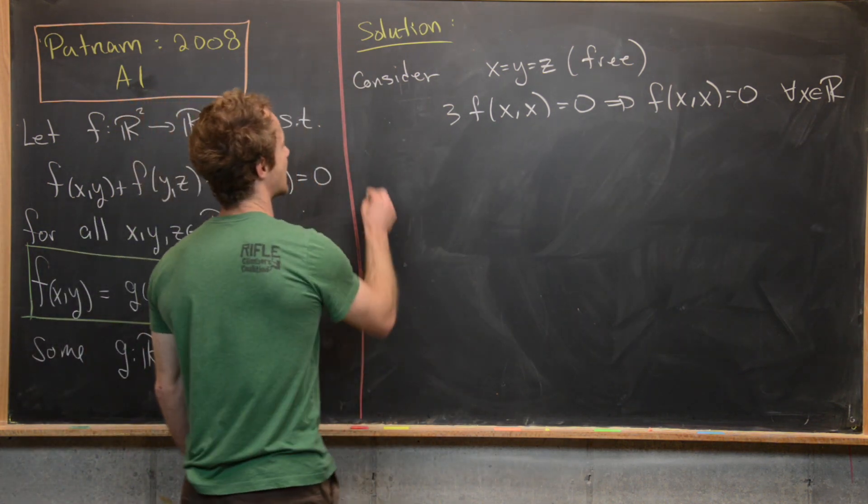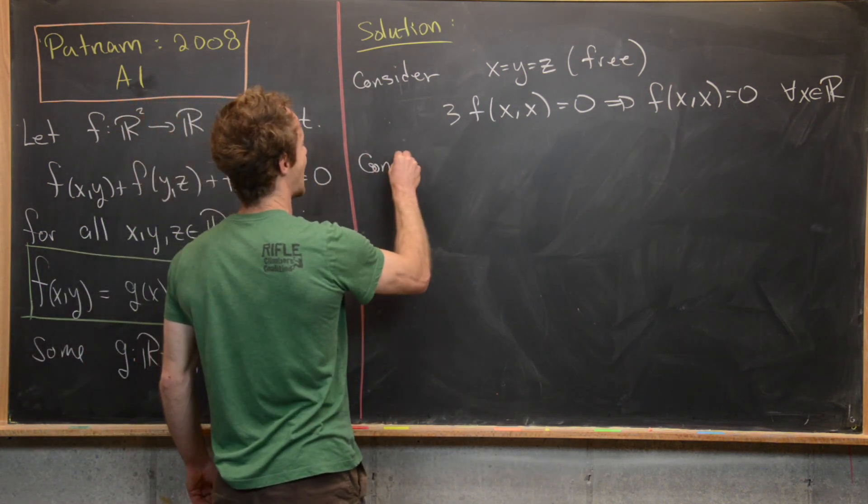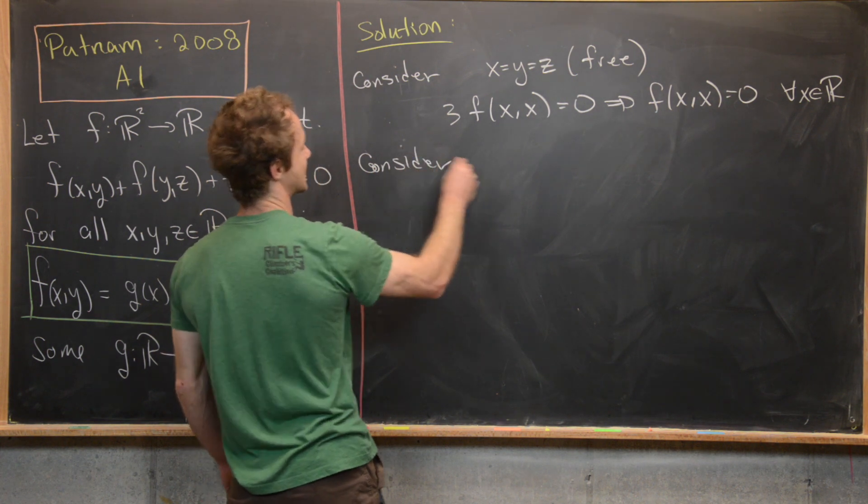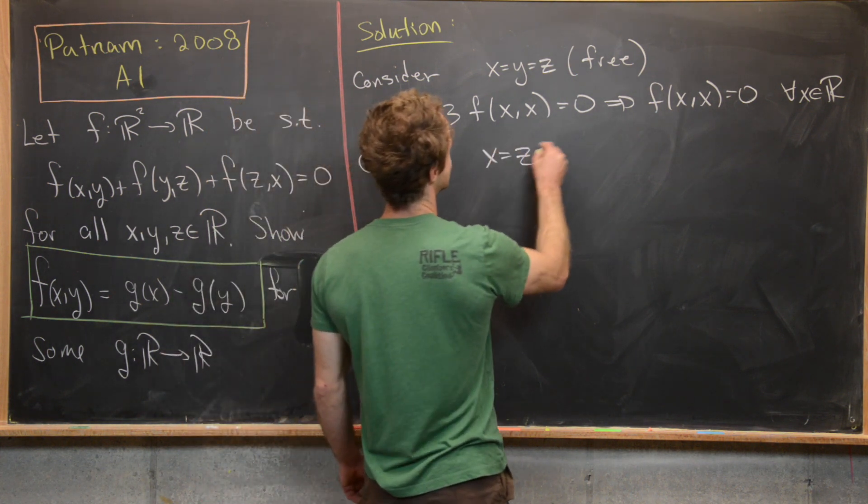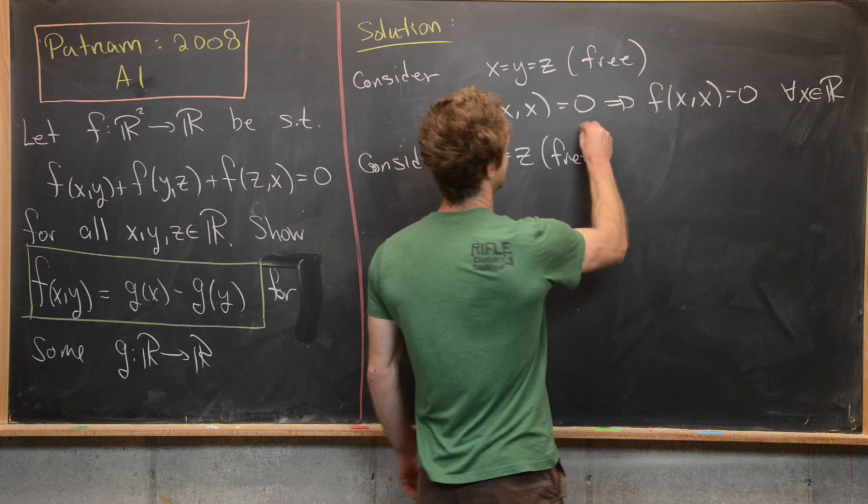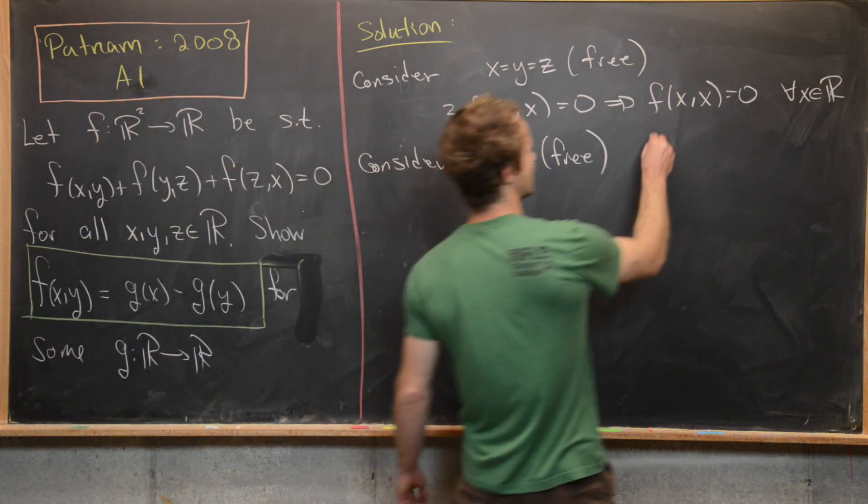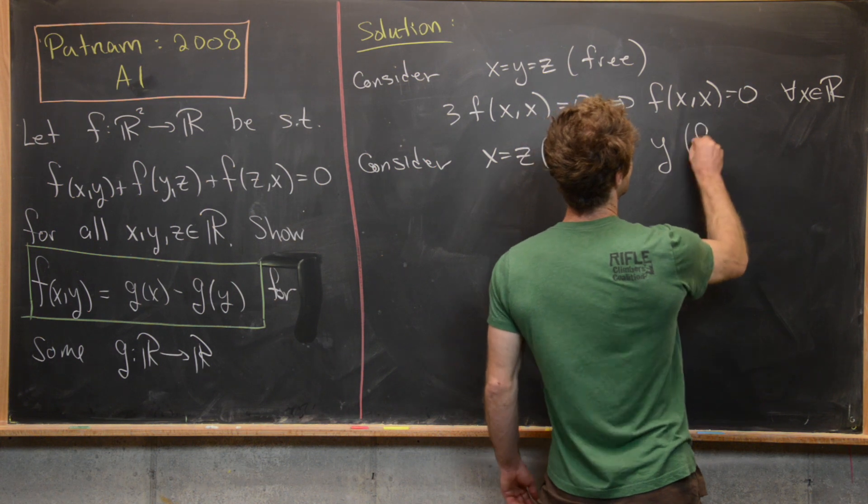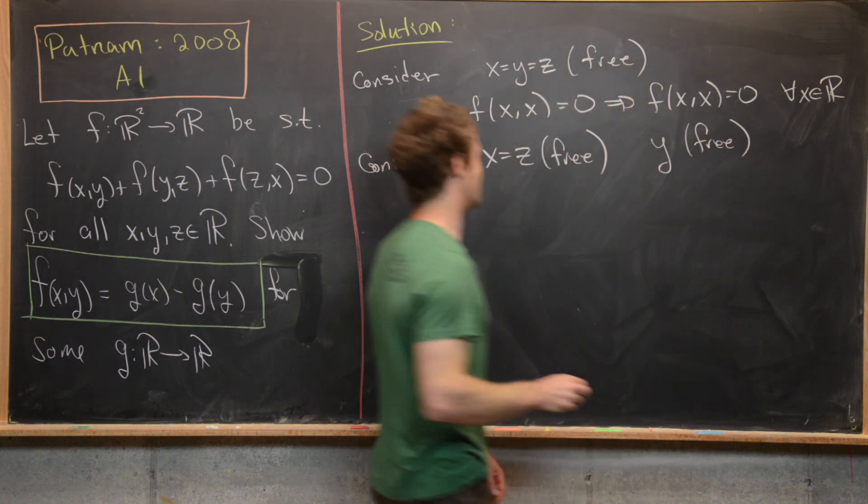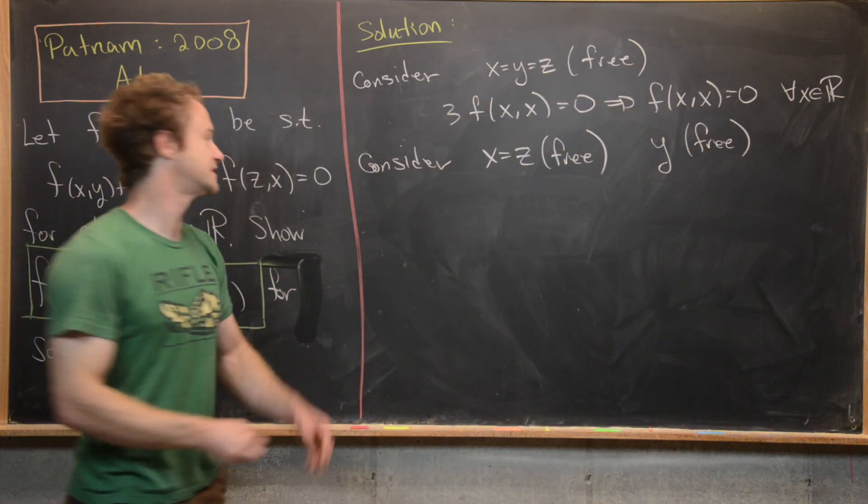Okay, so the next thing that I'm going to look at is let's consider x and z to be the same thing. So x equals z, which is still free to be anything, but they have to be the same thing. And then finally, y is free to be independent of x and z. So let's notice what we get.